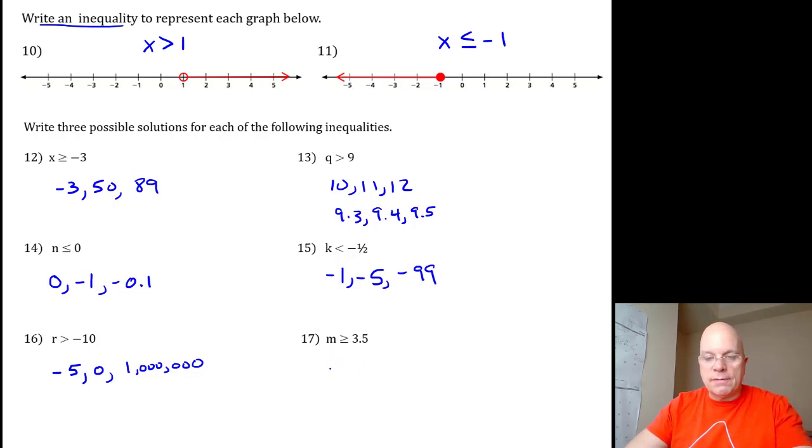17, m is greater than or equal to 3.5, so if you have 3.5, that's a possible value for m. 3.51, 3.52, anything to the right of 3.5 or 3.5 itself could be considered a solution.